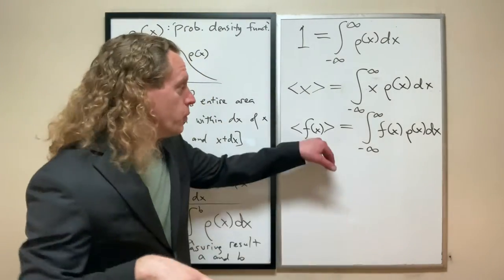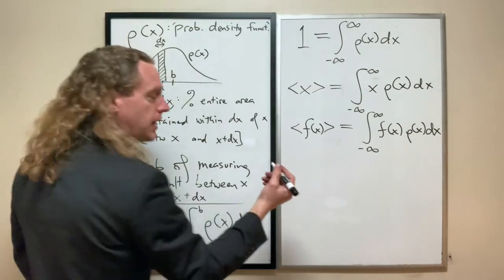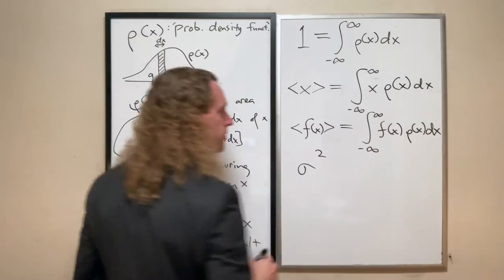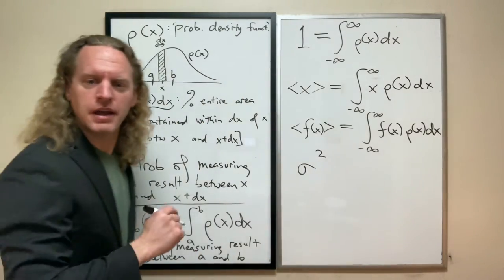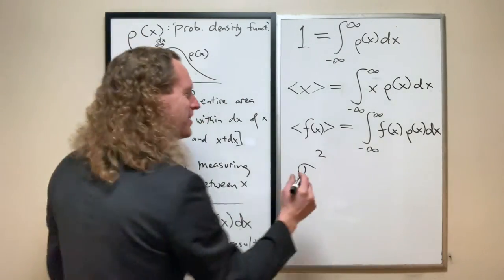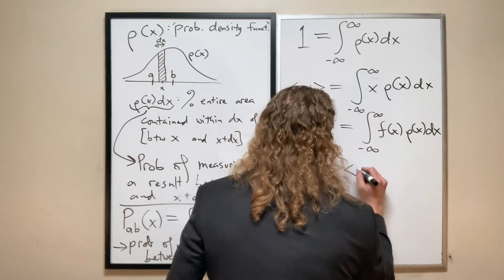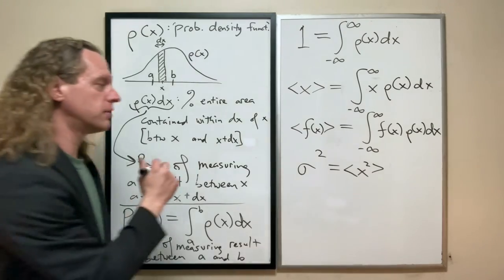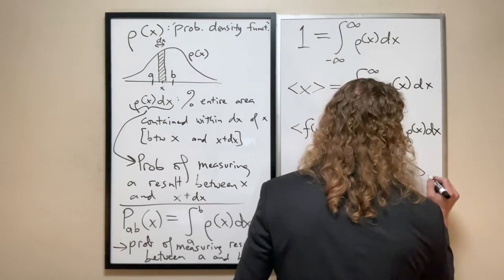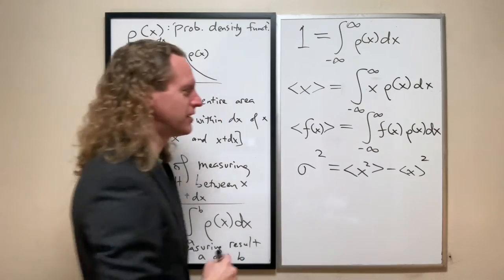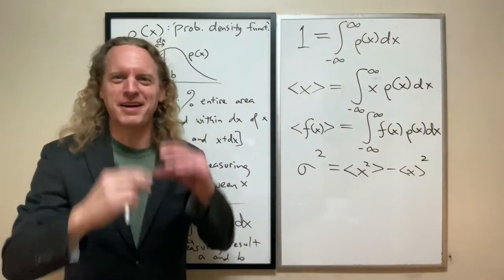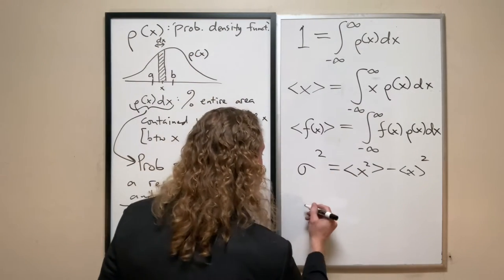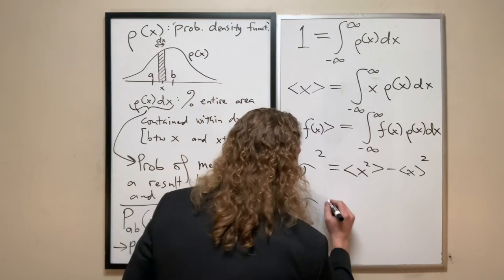And then, the last main thing that we came across last time, the variance, which was σ², is given by, I tend to get this wrong, so I did actually write it down, the expectation value of x² minus the expectation value of x squared. I guess the faster you say it, that implies where the brackets are placed. So, that's the variance, and so the standard deviation, you just take the square root of both sides.